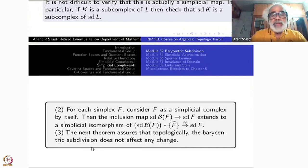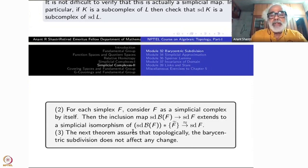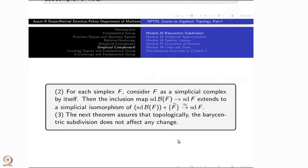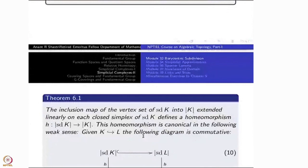We want to verify the same thing for every simplicial complex: |sd(K)| is the same as |K|. That follows now. The next theorem asserts that topologically, the Barycentric subdivision does not affect any change. Remark 2 tells you the whole story, but I am putting it in a neat theorem now.